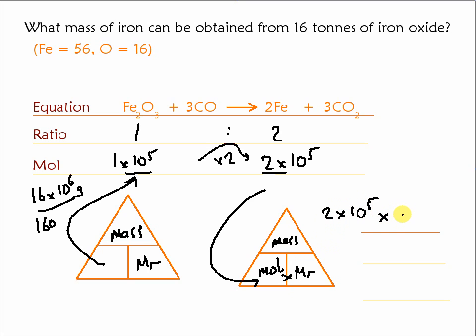Multiply it by the Mr of iron on its own. 56. That comes out as 112 times 10 to the 5 grams. Which I could rewrite as 11.2 tonnes.